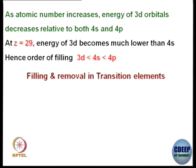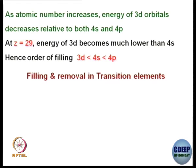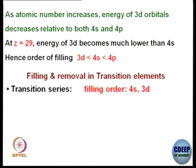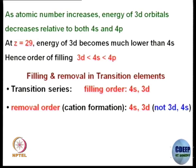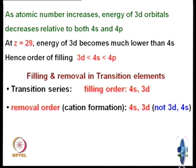Now another important thing to understand: overall, 4s fills out fast then 3d — but what is the removal order? For the transition metal series, the filling order is 4s then 3d, but the removal order is also 4s first, then 3d. This is a little contradictory — you might expect that since 3d fills out later, 3d electrons should leave first during removal. But that is not the case: 4s fills first and 4s also leaves first.